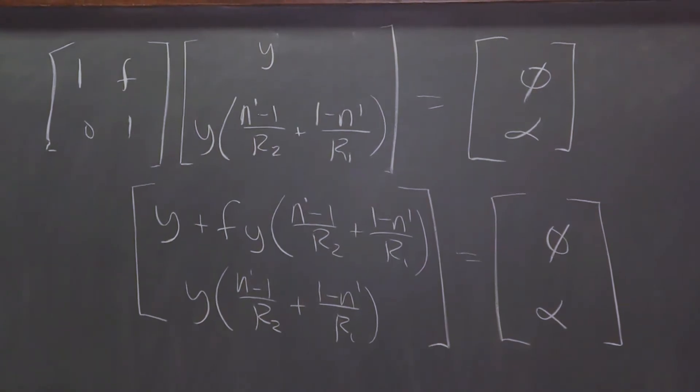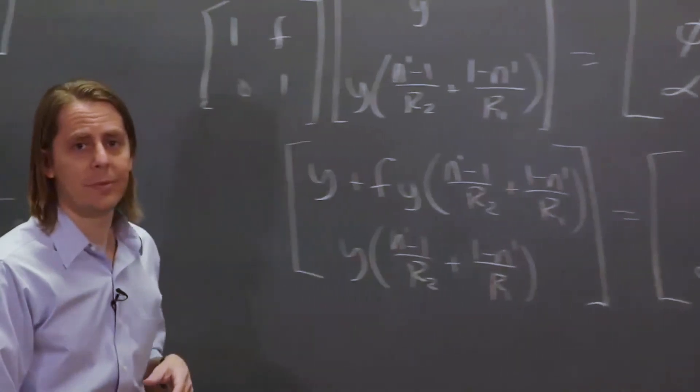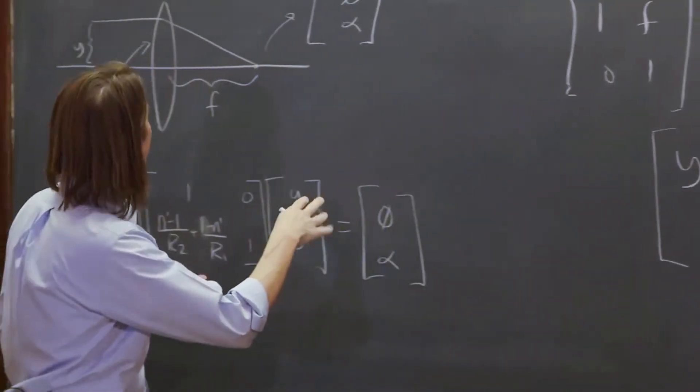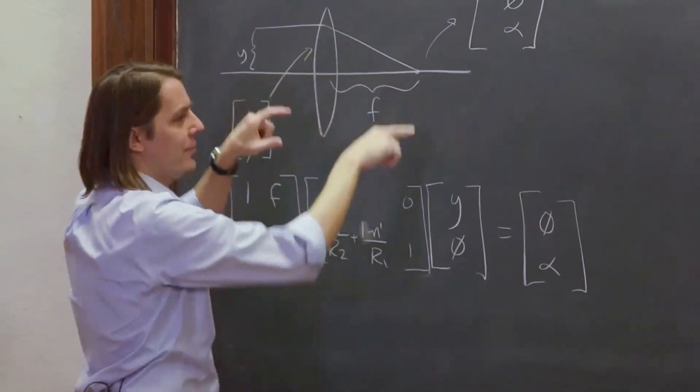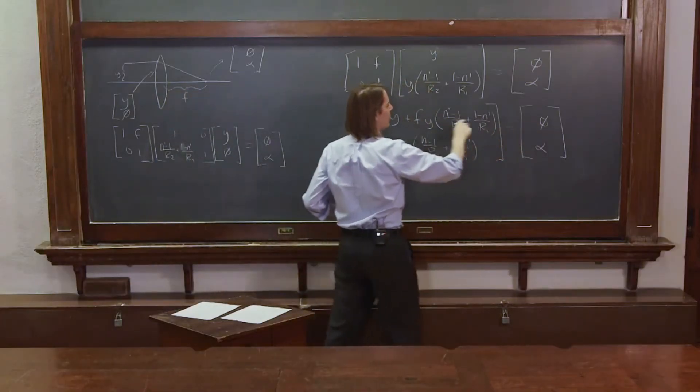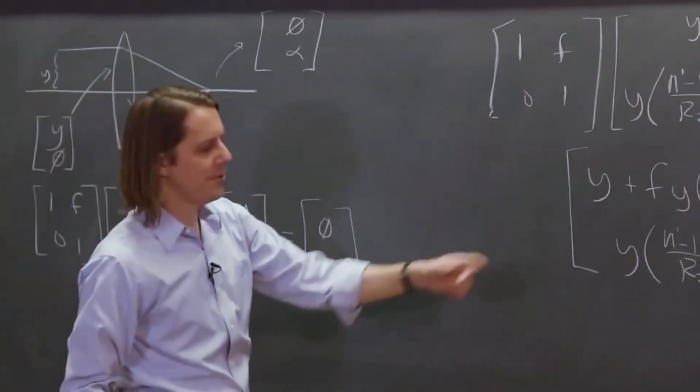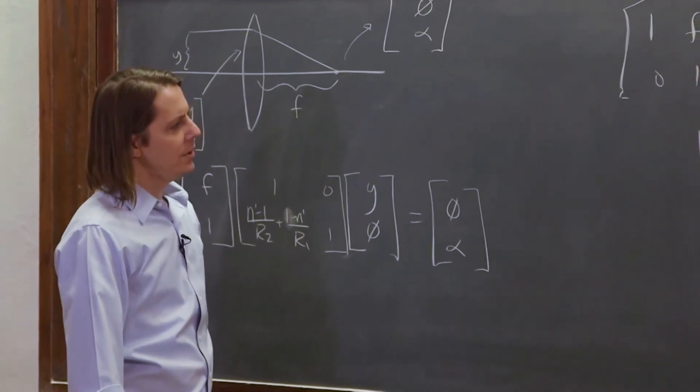Now we have a vector equals a vector. This term has to be equal to that, and this term has to be equal to that. We don't actually care about alpha. Our basis for figuring this out is f. At f, the height should go to 0. So we really just care about this top line. We also know we just care about the top line because it's the only one with an f in it. There's no f in the bottom. It's not going to tell you anything.